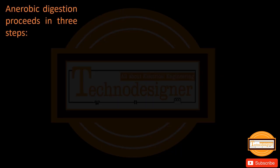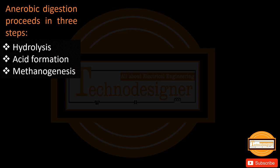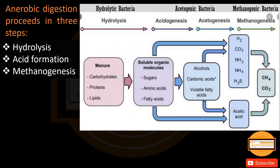Anaerobic digestion proceeds in three steps: hydrolysis, acid formation, and methanogenesis. In the process of anaerobic digestion, the biomass products are converted into carbohydrates, proteins, and lipids via hydrolysis. These are then converted into organic molecules like sugars and amino acids. These organic molecules are further converted into alcohols and acids via acetogenic bacteria. These acids and other products are then converted into methane and carbon dioxide — our biofuel and biogas — via the methanogenesis process.